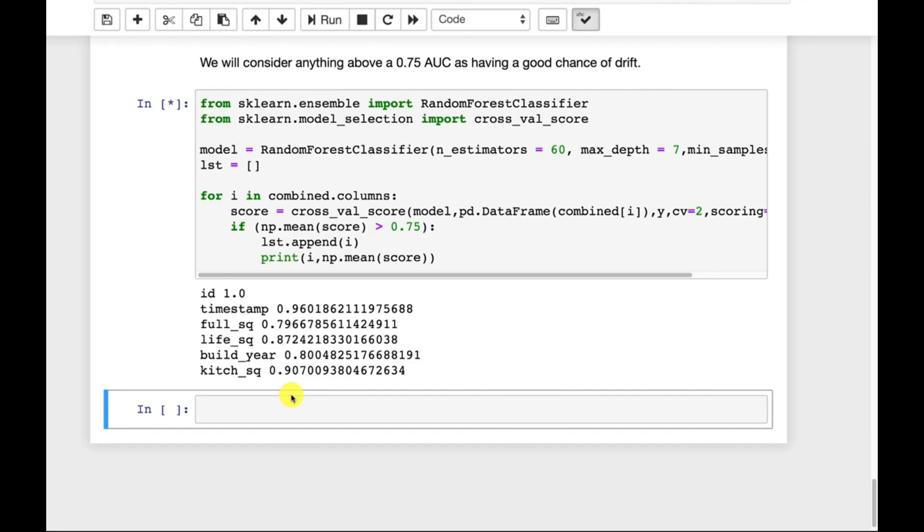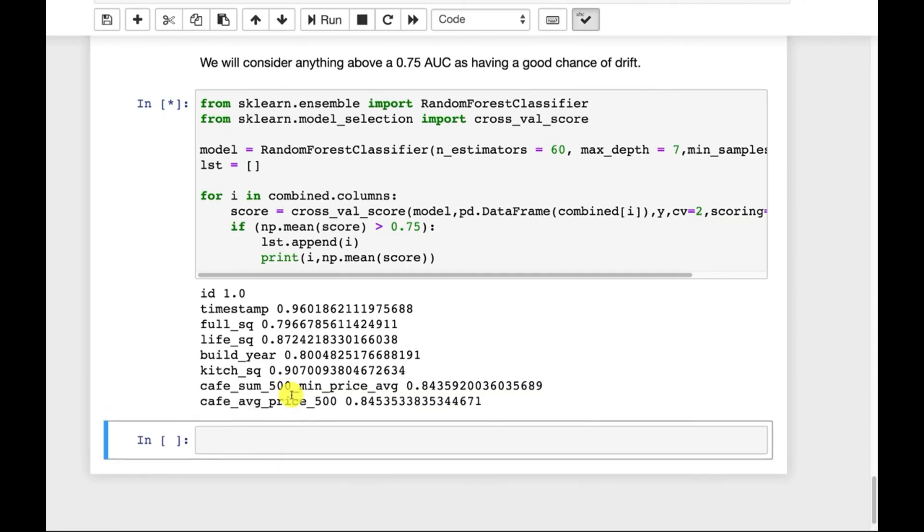But it's also very useful if you were collecting new data coming in. You don't need the outcome. You do not need the target for your new data. You can compare it to your original dataset and see if a random forest is able to predict if it's old data or if it's new data. If the random forest can predict with decent accuracy, like 0.87 AUC here, then the underlying data has probably shifted and you need to retrain your model.